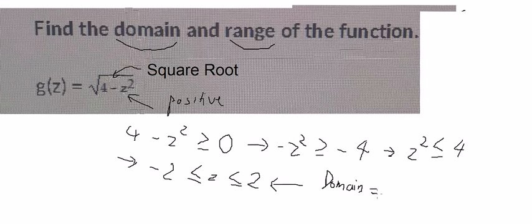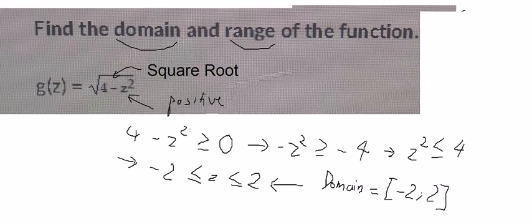And z is smaller than or equal to 2, and this is the domain. That should be from negative 2 to 2. Next, we want to find the range. So in this situation, we want to find the highest number.